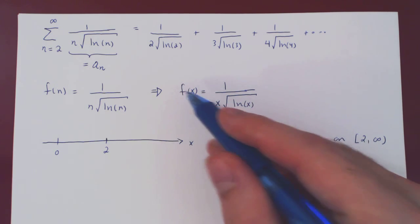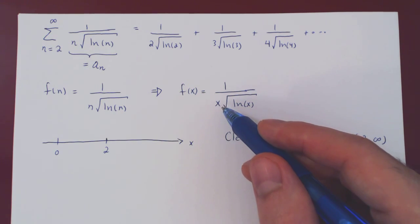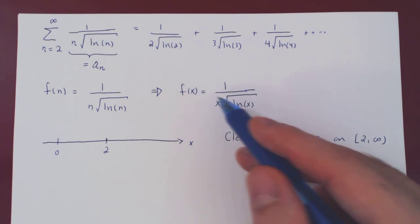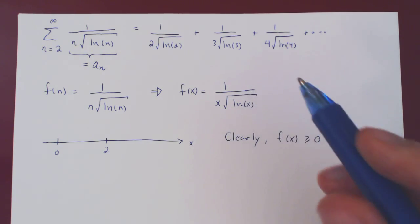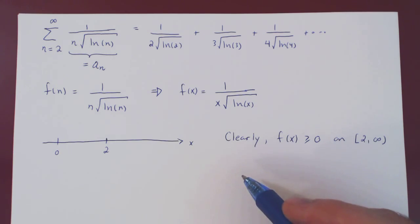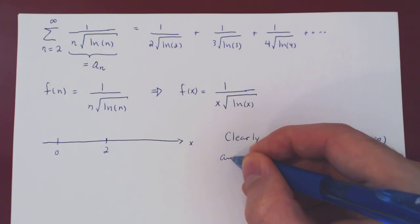So we do not need here to take the derivative. But make no mistake, sometimes the function may not be clearly decreasing, and then you will have to take the derivative. But here, not the case, so clearly f of x is non-negative and decreasing.